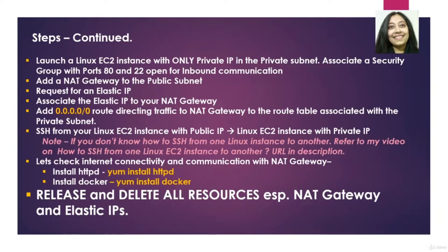Once we have successfully SSH-ed from our public EC2 instance to our private EC2 instance, we will install HTTPD and Docker. But the most important thing is that you release and delete all resources, especially the NAT gateway and elastic IPs. NAT gateway has a considerable cost — if left running for even a couple of hours, costs can build up fast. Ensure you disassociate and release elastic IPs before terminating EC2 instances.